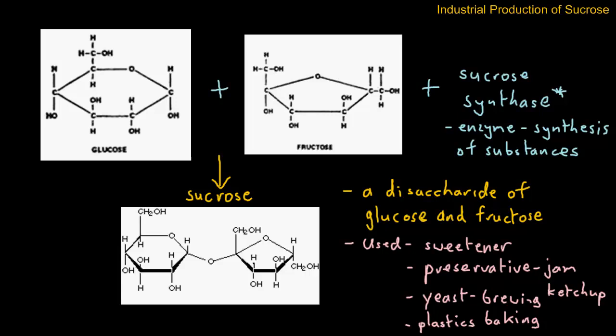So as you can see, sucrose is used in a lot of different industries in the food industry, the brewing industry, and even in the plastics industry. So that was a quick look at the industrial production of sucrose.